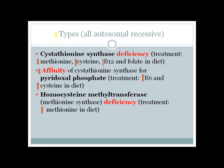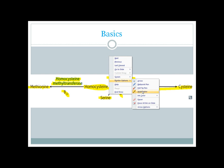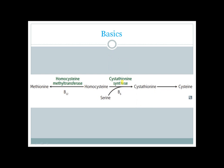There are three types of homocystinuria, and all are autosomal recessive, like other enzyme deficiencies. The most important and most common type is a deficiency of cystathionine synthase. When cystathionine synthase is deficient, the formation of cystathionine is decreased, resulting in decreased levels of cysteine.